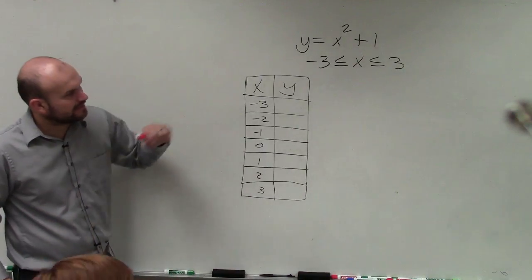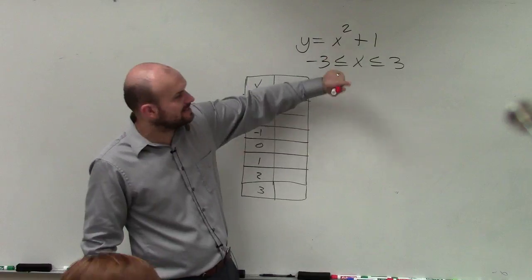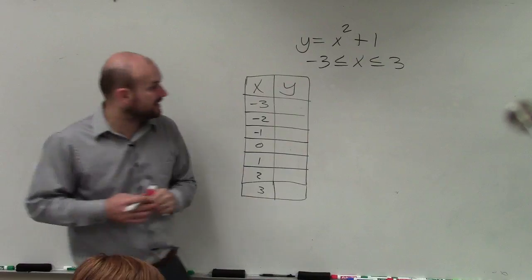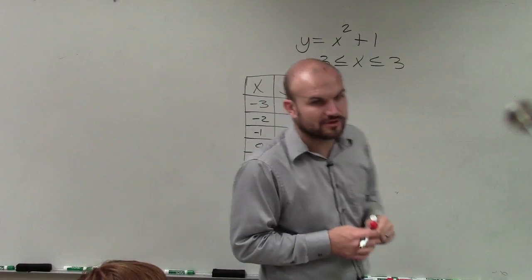So as I'm going over this, ladies and gentlemen, again, what I'm trying to do is create a table of values for y equals x squared plus 1 between the values of negative 3 is less than or equal to x, which is less than or equal to 3.